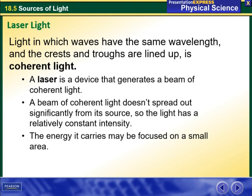A laser is a device that generates a beam of coherent light. A beam of coherent light does not spread out significantly from its source, so the light has constant intensity. The energy it carries may be focused on a small area.